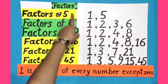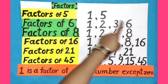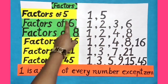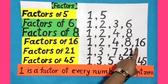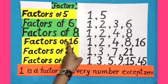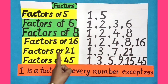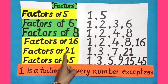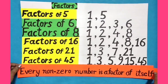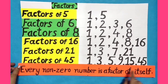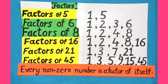Dear students, 5 is the factor of 5, 6 is the factor of 6, 8 is the factor of 8, 16 is the factor of 16, 21 is the factor of 21, and 45 is the factor of 45. That means every non-zero number is a factor of itself.